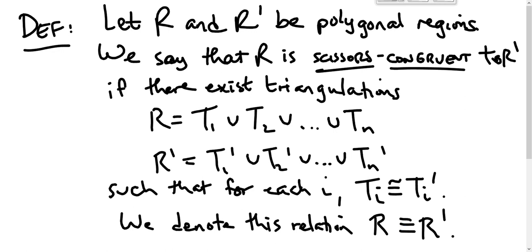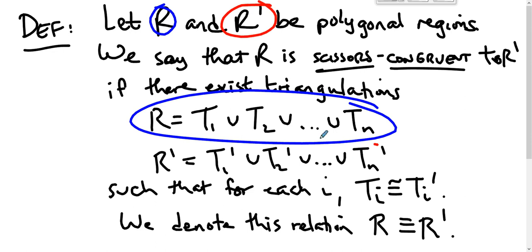So what are we saying? You have some polygonal region, you can break it up into a bunch of triangles. You have some other polygonal region, you can break it up into a bunch of triangles. If these are the same and these are the same and they're all the same, then the figures are scissors congruent.